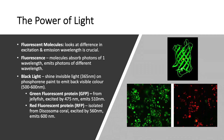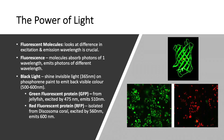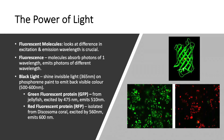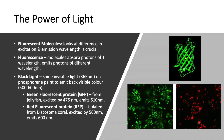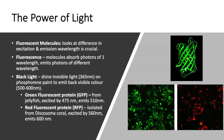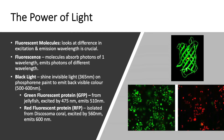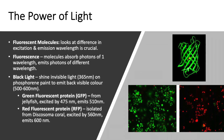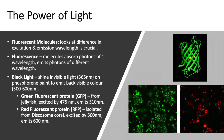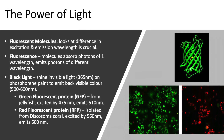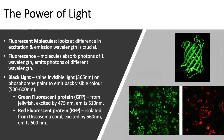Fluorescent molecules look at differences in excitation and emission wavelength. Fluorescence refers to molecules that absorb photons of one wavelength and emit photons of different wavelengths. Black light is the shining of invisible light — about 365 nanometers wavelength — on phosphorescent paint to emit back a visible color, which is a wavelength between 500 to 600 nanometers. You could look at green fluorescent protein, or GFP, which is derived from jellyfish and excited by 475 nanometers, emitting light of 510 nanometers.